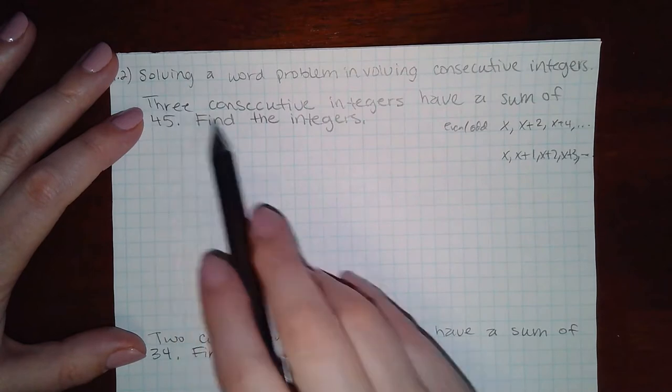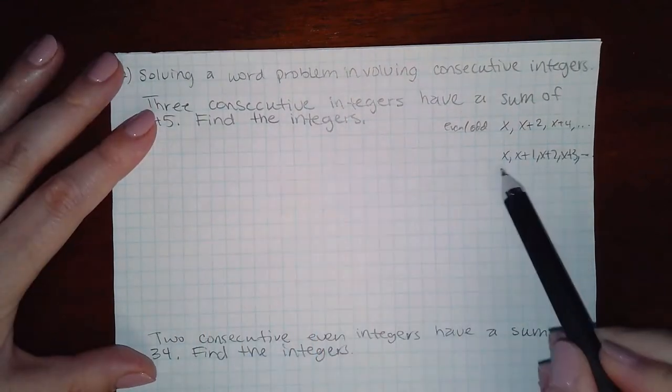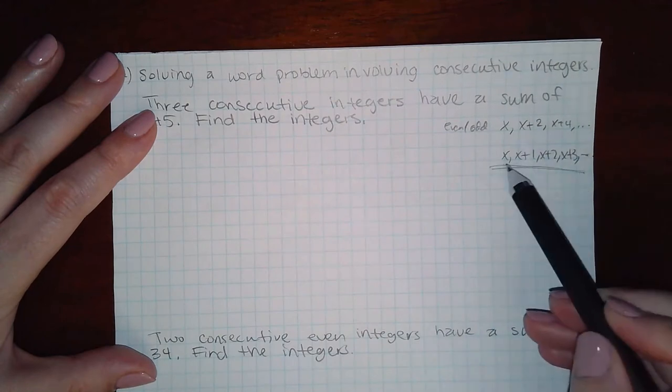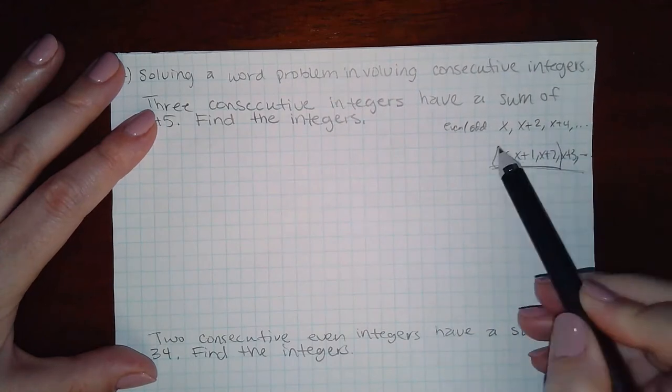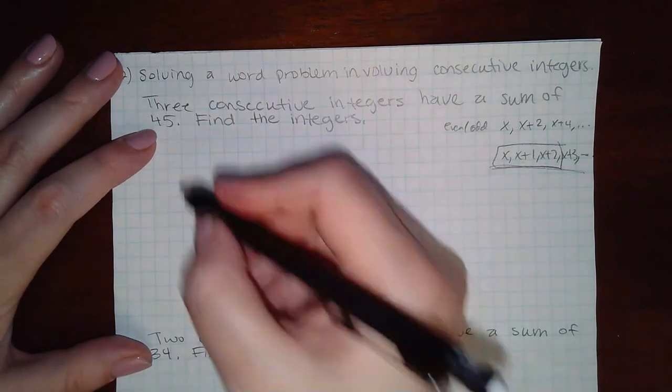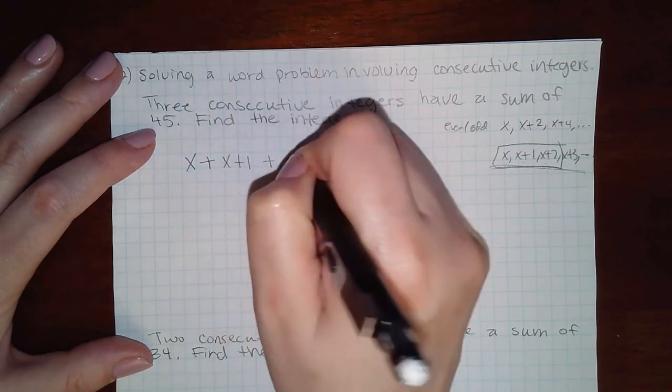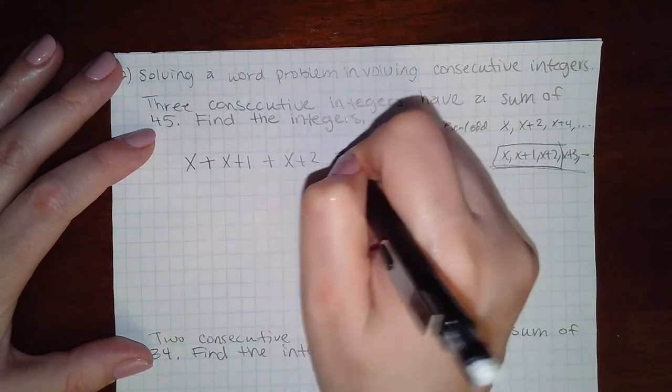Here it says we have three consecutive integers. It does not specify even or odd, so it's going to be the regular case. I need to take three of them, which means only these three terms. They have a sum of 45, which means the first integer plus the second integer plus the third integer should equal 45.